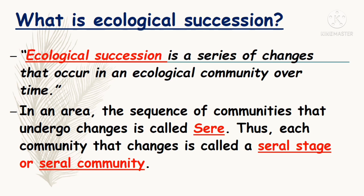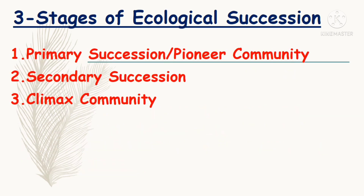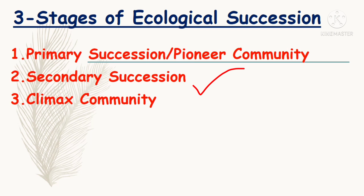Now we will talk about the three stages of ecological succession. The first stage is primary succession, also known as pioneer community. The second one is secondary succession, and the third one is climax community.